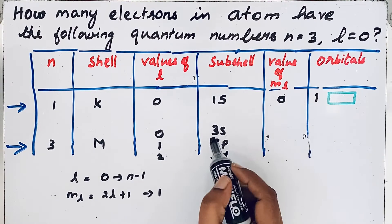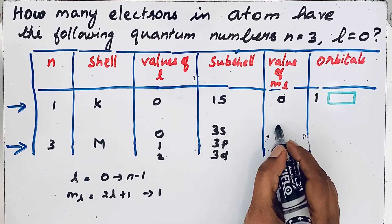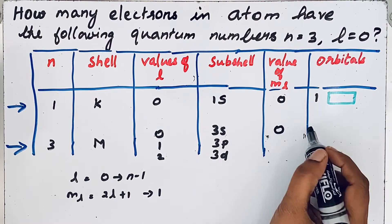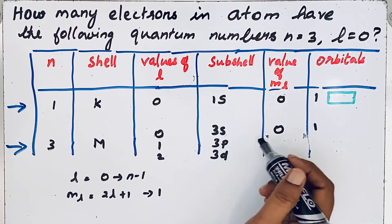If l equals 1, 3p; l equals 2, 3d. Now, come to ml value. If l equals 0, the value of ml is also 0. That means only one orbital is present. Let us complete the ml values for 3p and 3d orbitals.